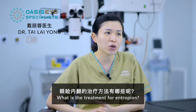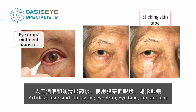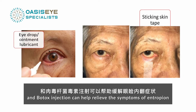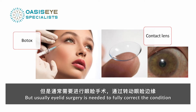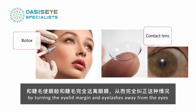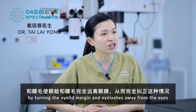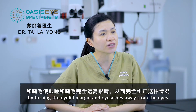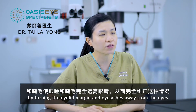What is the treatment for entropion? Artificial tears and lubricating eye drops, eye tape, contact lenses, and Botox injections can help relieve the symptoms of entropion. But usually eyelid surgery is needed to fully correct the condition by turning the eyelid margin and eyelashes away from the eye.